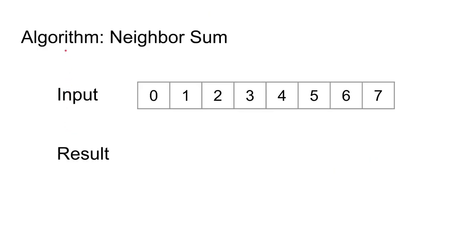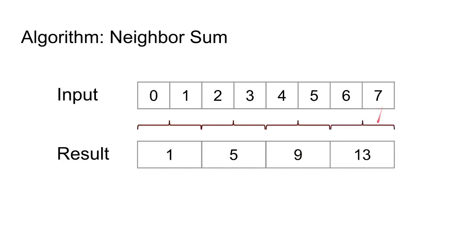Let's look at an example. Here I have a very simple algorithm which I call neighbor sum. As an input you have a set of consecutive numbers from zero to seven, and what I want is to add each two neighbor numbers together. For example, 0 plus 1 is 1, 2 plus 3 is 5, 4 plus 5 is 9, 6 plus 7 is 13. My input was this set of numbers, my output is an array called result which has 1, 5, 9, and 13.